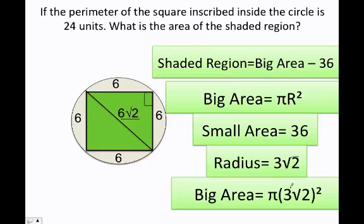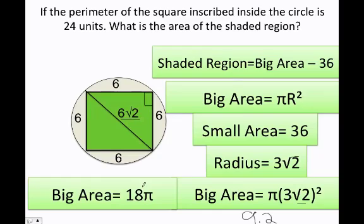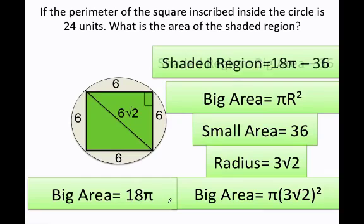Now I can use the area formula: π times (3√2) squared. That gives π times 9 times 2, since 3 times 3 is 9 and √2 times √2 is 2. So 9 times 2 equals 18, meaning the big area is 18π. Therefore, the shaded region is 18π minus 36.